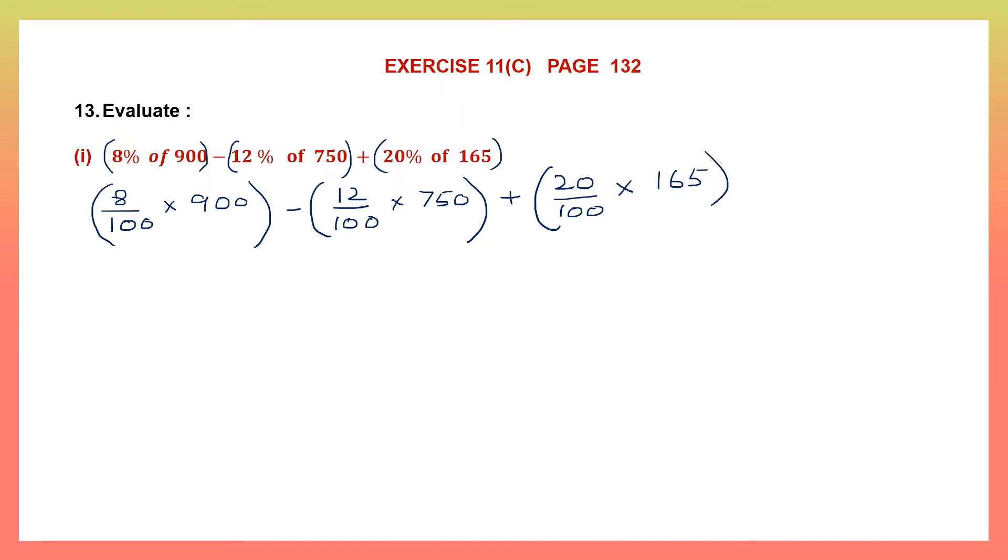So 8% of 900 means 8 by 100 offers into 900, minus 12% is 12 by 100 into 750, plus 20 by 100 percent into 165. Now let's see if we can cancel some things. Starting with the first bracket, I can cancel two zeros in 900 and two zeros in 100. What is left? 8 nines are 72 by 1.